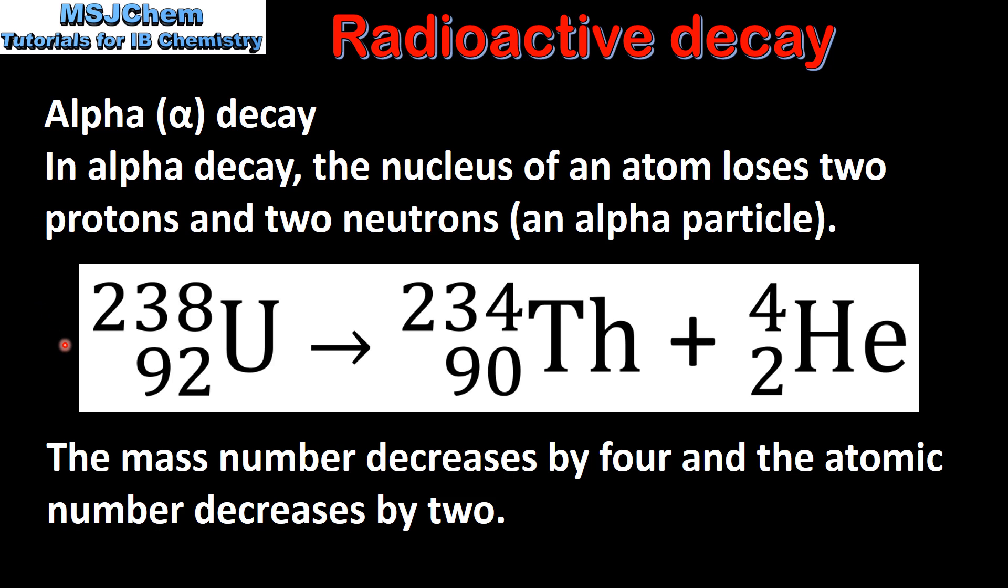Here we have a nuclear equation showing the alpha decay of uranium-238. The products are thorium-234 and an alpha particle. Because an alpha particle is composed of two protons and two neutrons, it is shown as a helium nuclei.